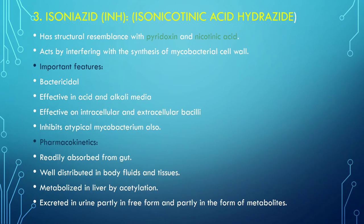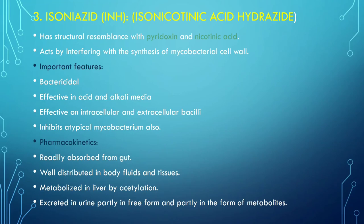Next is Isoniazid. This drug has a structural resemblance with pyridoxine and nicotinic acid. It acts by interfering with the synthesis of mycobacterial cell walls. Important features: it is bactericidal, effective in both acidic and alkaline medium, and inhibits atypical mycobacteria. Pharmacokinetics: it is readily absorbed from the gut, well distributed in body fluids and tissues, excreted in urine partly in free form and partly as metabolites, and metabolized in the liver by acetylation.